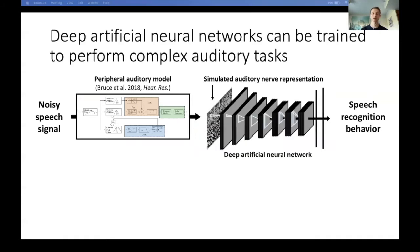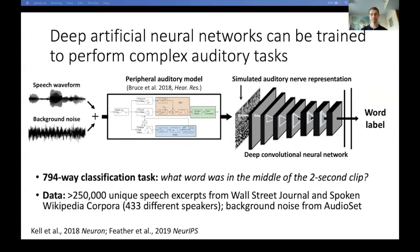Today I'll be talking about how deep artificial neural networks are a good candidate for such a model. In our lab, we often train models like these to recognize words from simulated cochlear representations. The network's task is fairly straightforward: we play two-second audio clips of speech and then ask it to report which word out of about 800 options appeared in the middle of the clip.